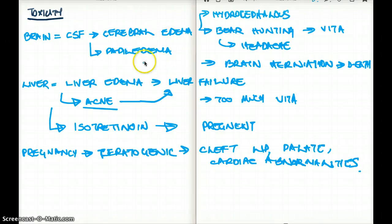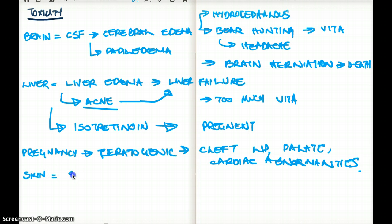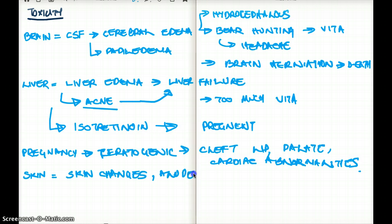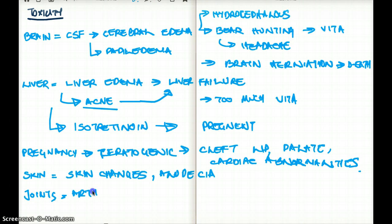Those are the big ticket topics for vitamin A toxicity. Other toxicities include skin changes, alopecia (baldness) from taking too much vitamin A, and arthralgia (joint pain). If you know any more toxicities, please let me know in the comments below. Hope you enjoyed this video.